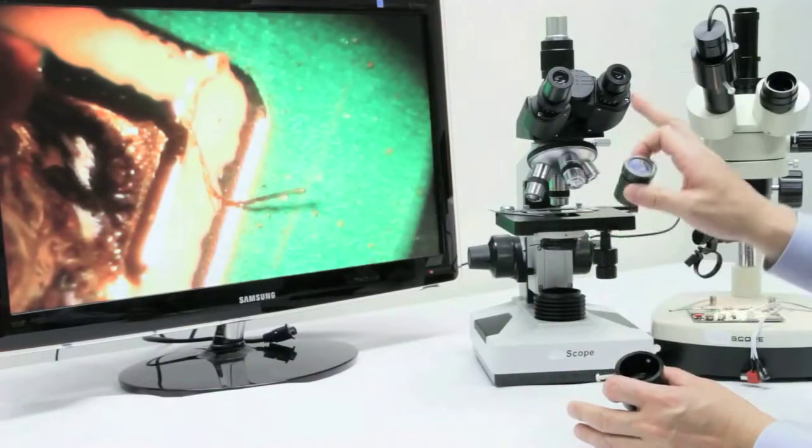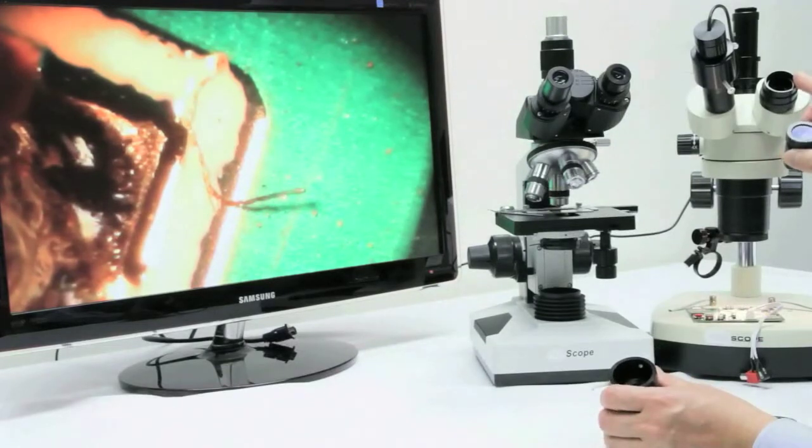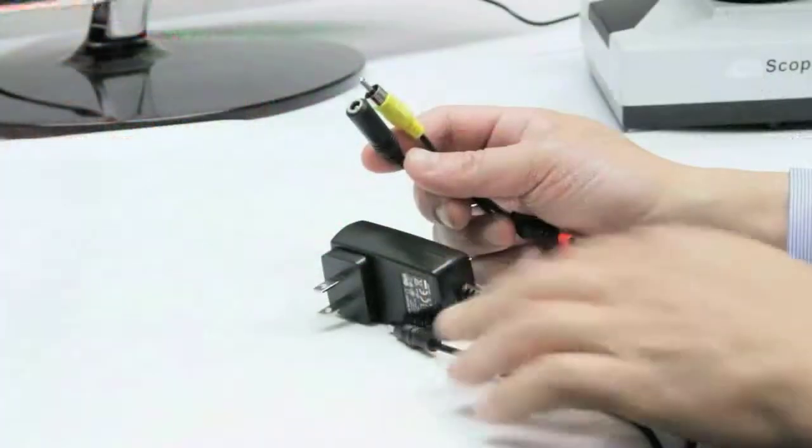For example, if you have an eyepiece slot of 28mm or 32mm, then the AM422UN is the eyepiece camera for you.